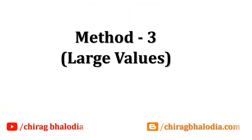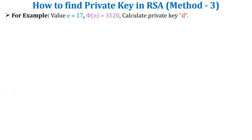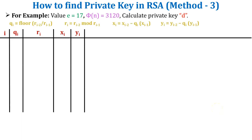Let's discuss method 3. Method 3 is also used for large values of public key e and phi of n. Let's take the same example: e = 17, phi of n = 3120. Calculate private key d. In this method I will calculate value d using the extended Euclidean algorithm. It is an alternative representation of the previous method, represented in a different way.